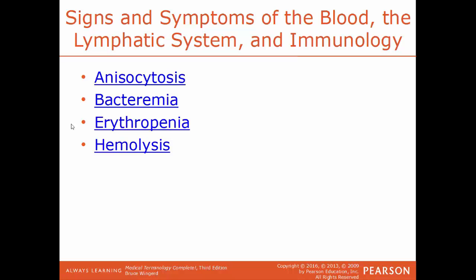Now we'll cover specific conditions of the blood and lymphatic and immune systems. Anisocytosis is a condition where red blood cells are of different sizes, commonly found in people with anemia. Bacteremia is the presence of bacteria in the blood — an invasion of bacteria into the bloodstream. Erythropenia is a deficiency in the number of red blood cells, often associated with anemia. Hemolysis is the destruction of blood cells, particularly red blood cells.